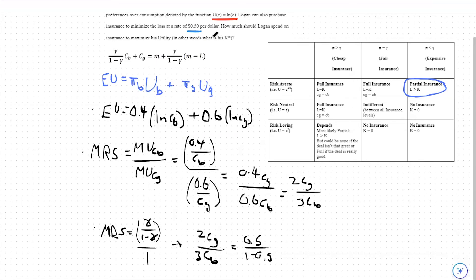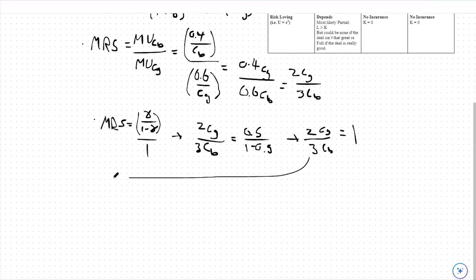Which means 2 thirds CG over CB is equal to 0.5 over 1 minus 0.5, which is 1. So 2 CG equals 3 CB, or CG is equal to 3 halves CB.